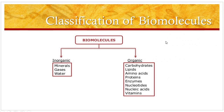Now coming to the classification of biomolecules. A cell contains various molecules known as biomolecules which can be classified into inorganic and organic biomolecules. Inorganic biomolecules include minerals, gases and water. Minerals can be subdivided into major elements, trace elements and ultra trace elements. Major elements form 98% of the weight of protoplasm and these minerals include carbon, hydrogen, oxygen, nitrogen, phosphorus and sulfur.